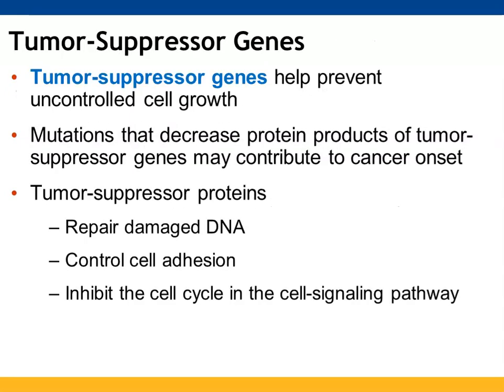We also talked earlier about tumor suppressor genes, which are able to help prevent cell growth from getting out of control. If these genes have mutations in them, they are not going to be able to prevent that, and that too could lead to cancer. The suppressor proteins are able to help repair damaged DNA, prevent cells from adhering to one another, and inhibit the cell cycle during cell signaling so it doesn't constantly keep being signaled to go through those metabolic processes.